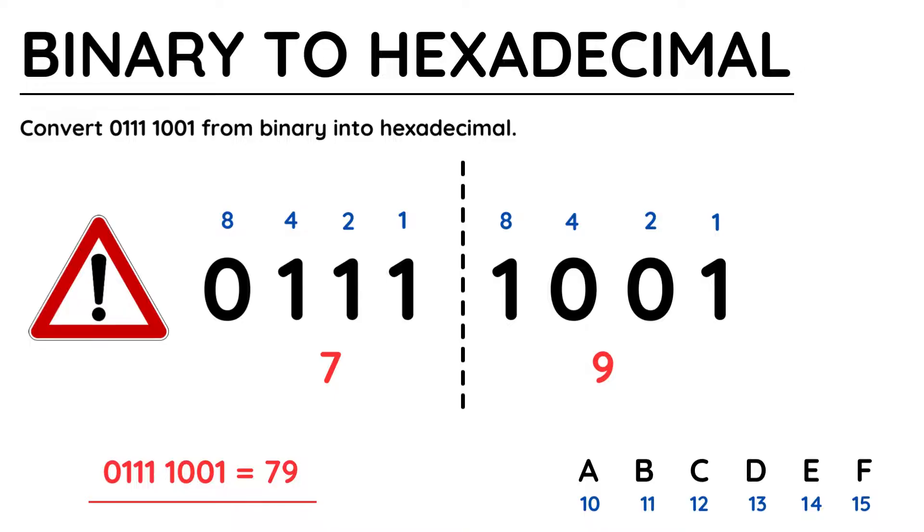So read the exam question carefully to understand which number system you are being asked to convert into. Also be aware that a hexadecimal value may not contain a number either, it could be two letters, for example, such as AC or EE.